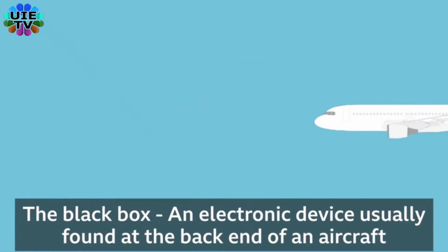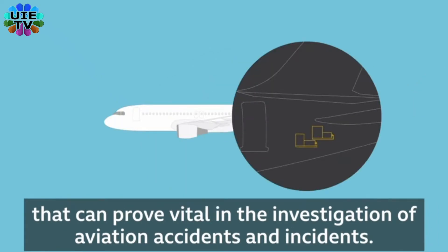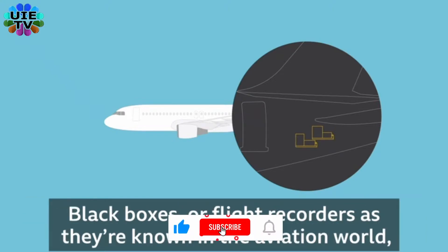The black box is an electronic device usually found at the back end of an aircraft that can prove vital in the investigation of aviation accidents and incidents.